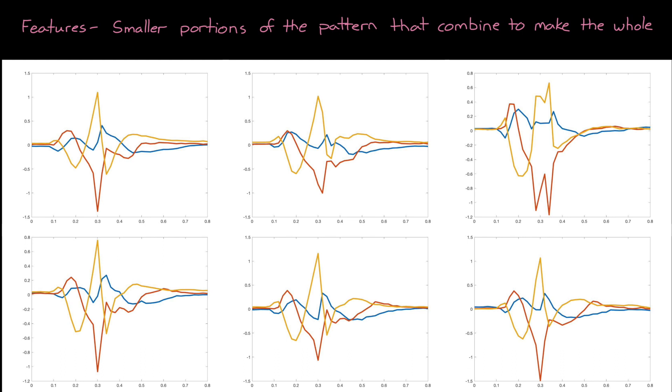By features, I mean smaller portions of the pattern that combine to make up the entire profile. For example, we may reason that a high-five profile consists of a slow acceleration at the beginning, corresponding to a person raising their hand, then another slow acceleration as they move their hand backward, followed by a quick acceleration as their hand moves forward and makes contact with another person.